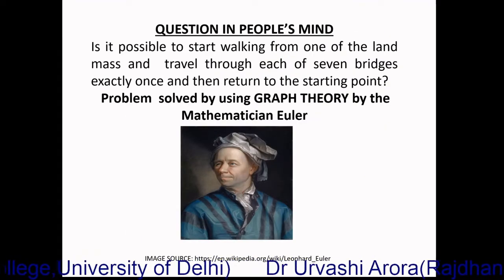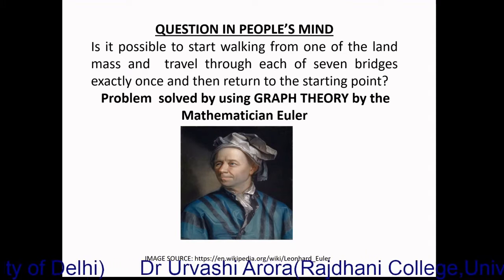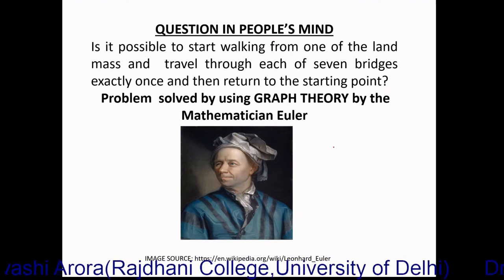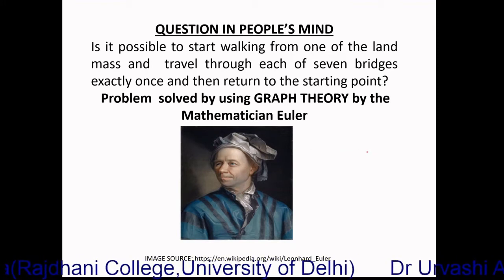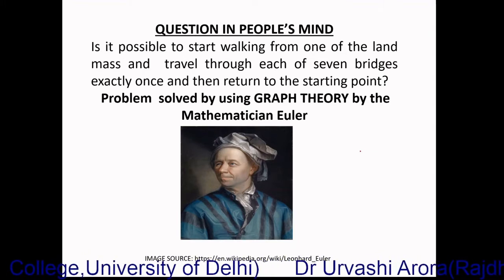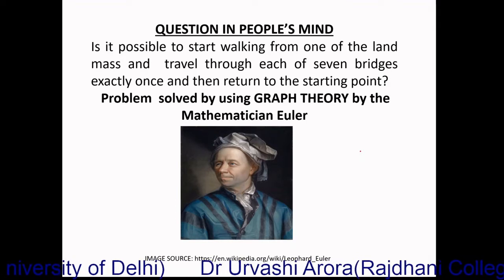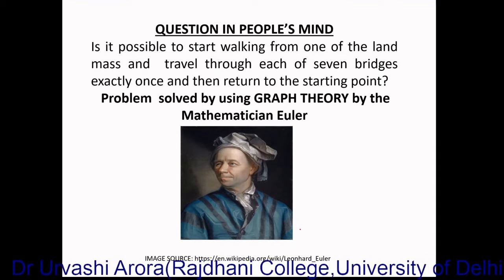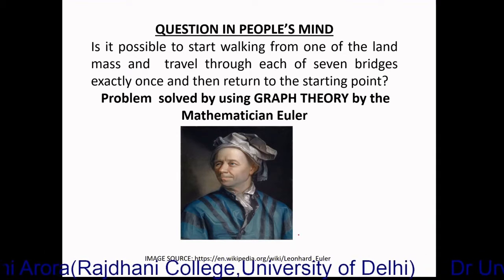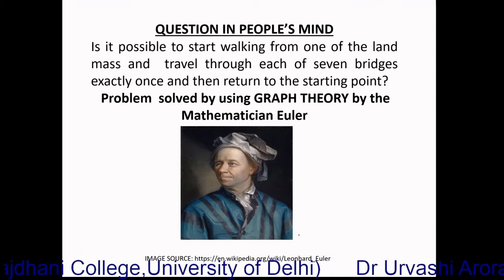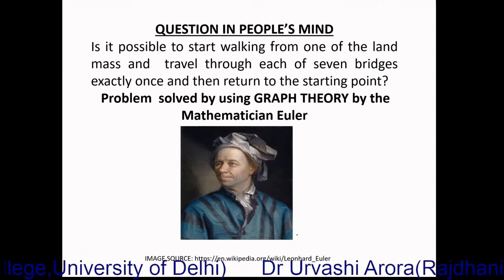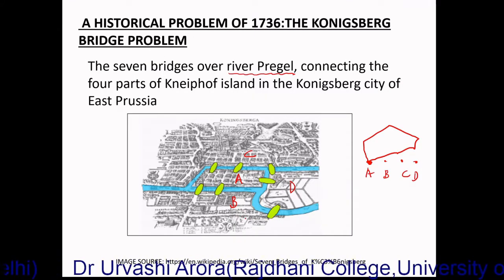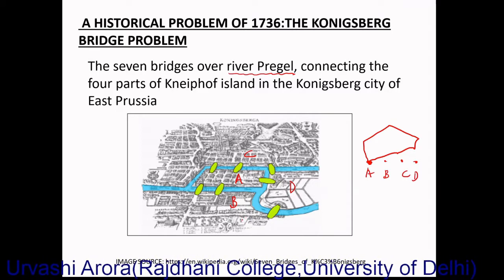This question which came in people's minds was translated into a mathematical problem of graph theory, and then it was answered by a mathematician called Euler — who is known as the father of modern graph theory. The answer Euler gave to this problem was no. This was done by converting the bridge map into a graph and then solving the problem.